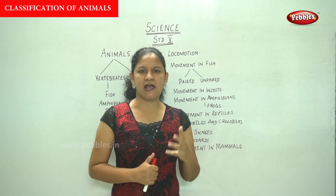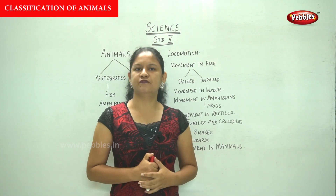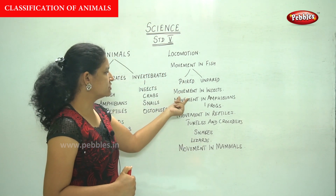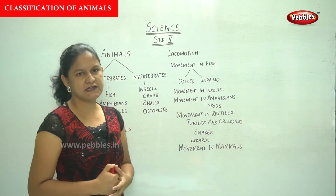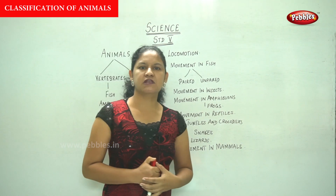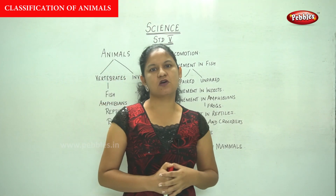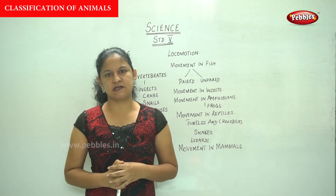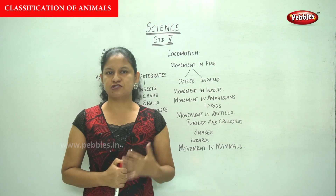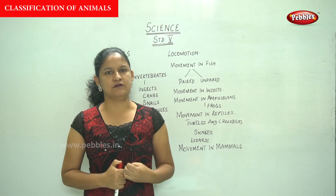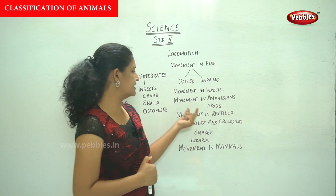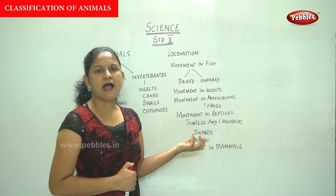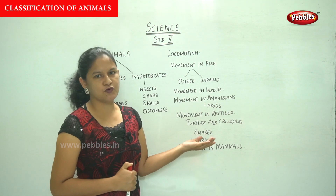The fins help fish to stabilize and steer themselves in water, and the tail and fins help the fish to move forward in water. Moving on to movement in insects: insects have three pairs of limbs and two pairs of wings, and the limbs help them to jump and crawl.